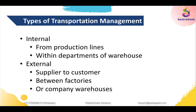Let's understand the different types of transportation. There are two types: internal and external. Internal transportation is done within the same premises, same plant, or same warehouse. Examples include taking a box from a desk to a production line for testing, or moving raw material from a warehouse to a production line to produce finished material. Within a warehouse, there are different sections — raw material storage, production supply, and finished product areas.